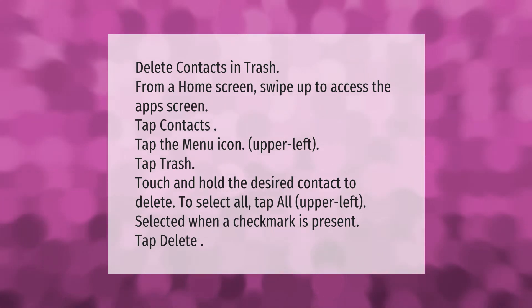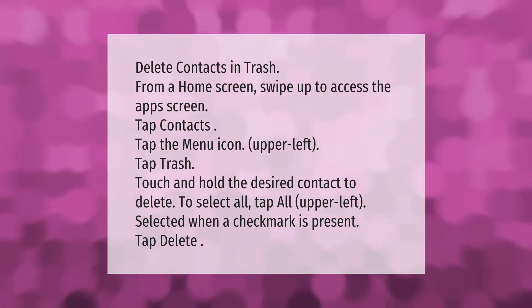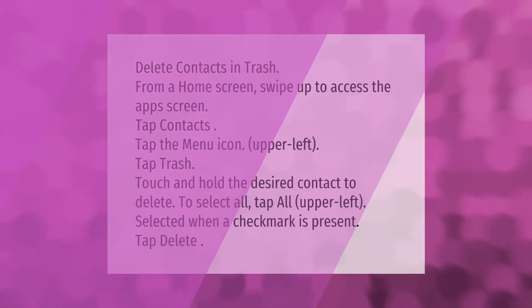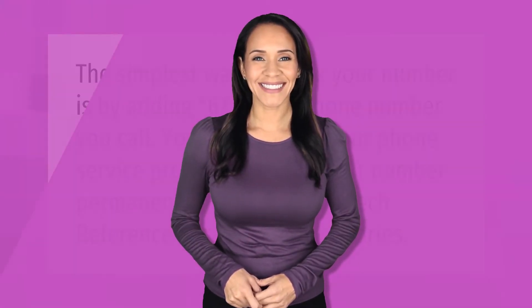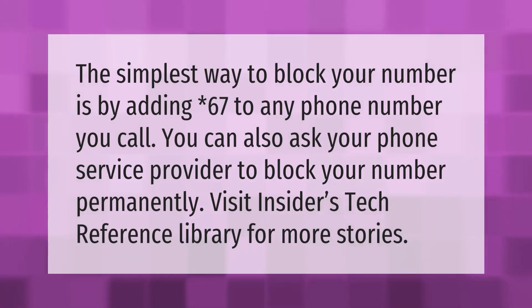The simplest way to block your number is by adding *67 to any phone number you call. You can also ask your phone service provider to block your number permanently. Visit Insider's Tech Reference Library for more stories.